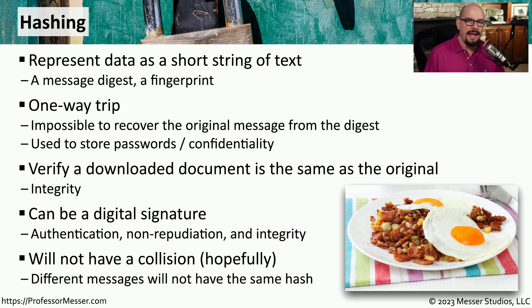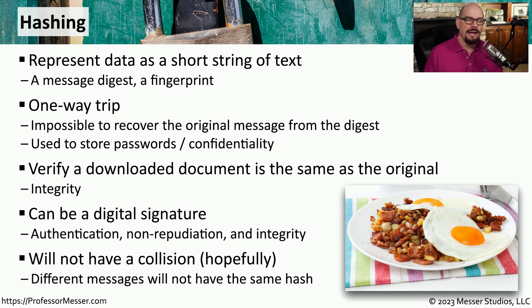One general rule of hashing is that if you have two different inputs and you provide a hash of each of those inputs, the two outputs should be very different. If we do happen to have two different inputs that create exactly the same hash output, then we have created a collision. In the past, we have stopped using certain hashing algorithms that tend to have problems with collisions, and instead have opted to use newer or better hashing algorithms.